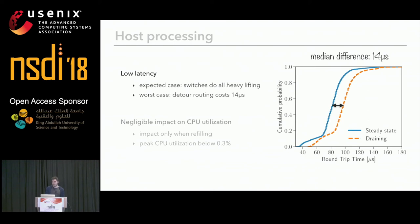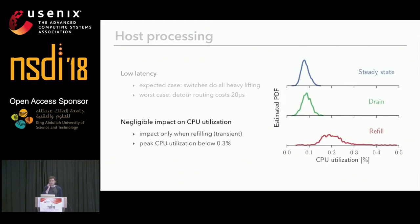When punting back to the original host, the MAC address now encodes the previous host and current host as matching, so processing immediately short-circuits and the packet is received locally. The paper has extensive benchmarking: this is extremely low latency. In the expected case, switches do all the heavy lifting. In the worst case, detour routing costs a median of 14 microseconds including actual network delay. CPU utilization impact is negligible — difficult to measure — and peak CPU utilization during host refill was below 0.3%.